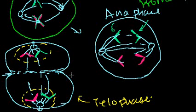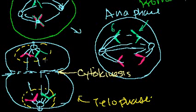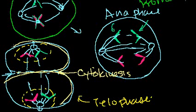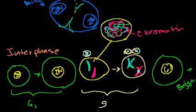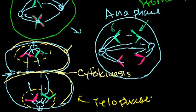So cytokinesis, which is formally not a part of mitosis, normally occurs with telophase. Right at the end of mitosis you normally have two complete identical cells. Then each of those two cells individually enters its own interphase — its own G1 phase — and then at some point replicates its chromosomes in the S phase, goes to G2, and then experiences mitosis all over again.